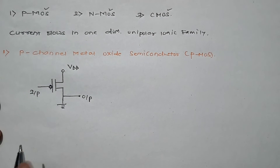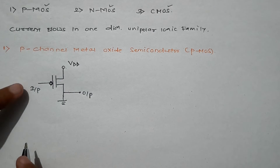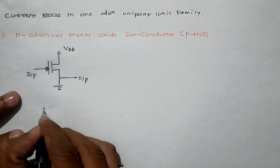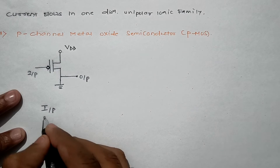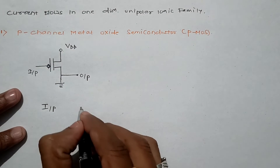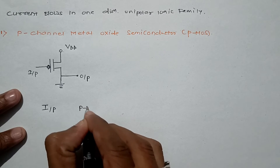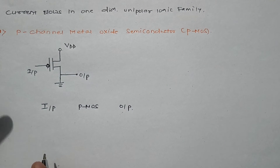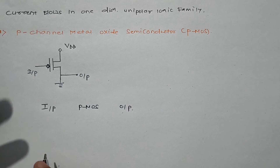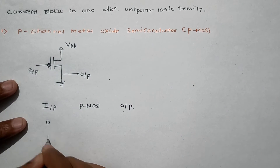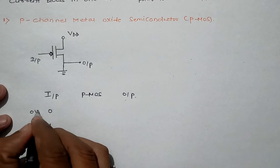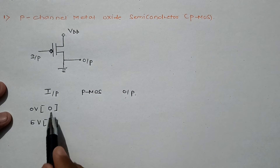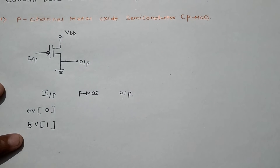Now coming to its working principle, we have two important terms: input and output. The input may be in the form of voltage or logic levels. We have the PMOS transistor Q, and we take the output here. The input can have only two levels — either 0 or 1 — where 0 volt corresponds to logic 0 and 5 volts corresponds to logic 1.